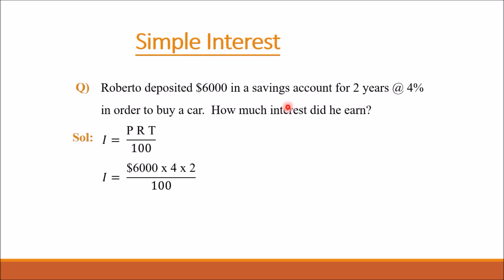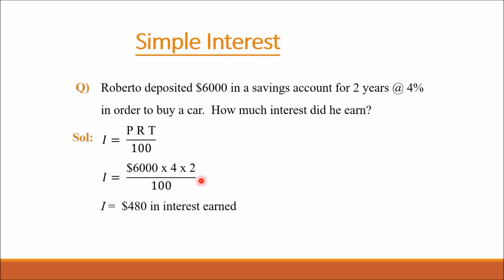The rate of interest is given as 4%, so R equals 4. The time period for which the amount is saved in the account is 2 years, so T equals 2. After calculating, we get the value $480, which is the interest earned.